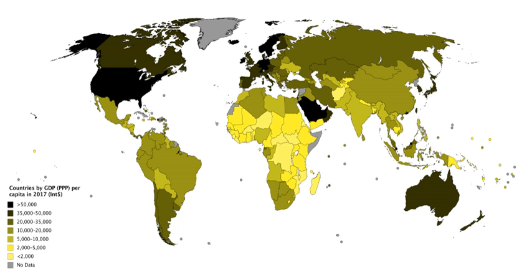A crucial role was played by the U.S. Department of Commerce under Milton Gilbert, where ideas from Kuznets were embedded into governmental institutions. The history of the concept of GDP should be distinguished from the history of changes in ways of estimating it. The value added by firms is relatively easy to calculate from their accounts, but the value added by the public sector, by financial industries, and by intangible asset creation is more complex.